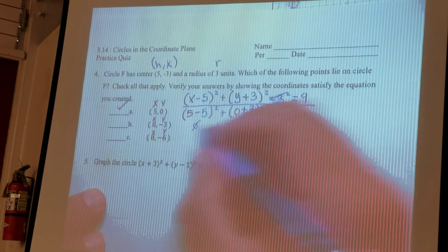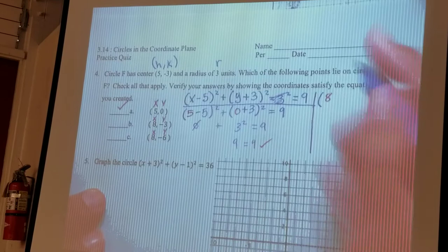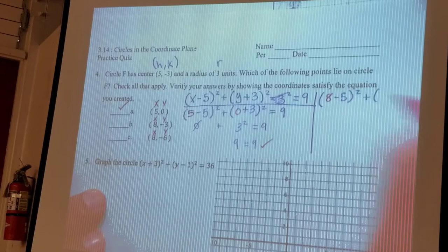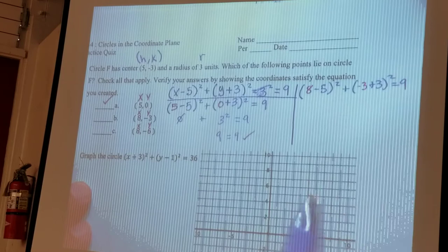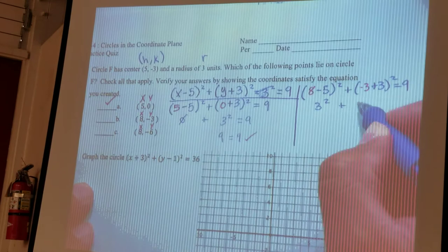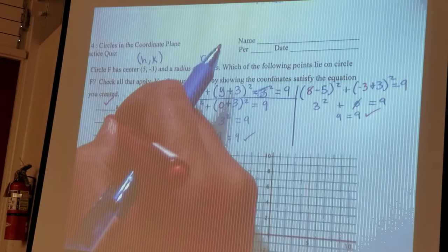8 goes into there, and negative 3 goes into the Y. So, this becomes... So, let's see if this pans out. 8 minus 5 is 3 squared plus negative 3 plus negative 3 is 0. And then right away, I can see, well, 3 squared is 9 equals 9. So, the second point works as well.